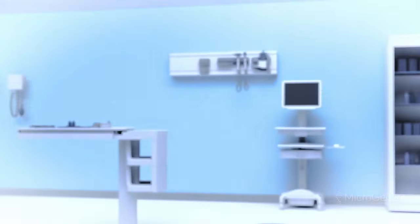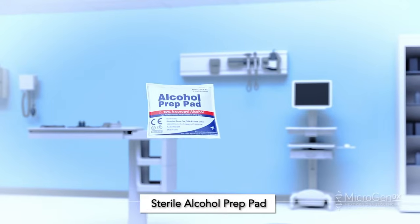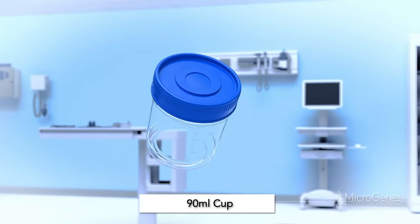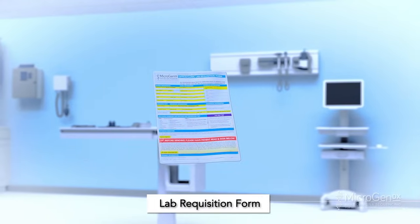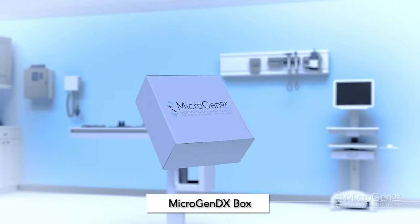The MicroGen DX Collection Kit will include 1 sterile alcohol prep pad, 1 90ml cup, 1 multipurpose swab, a bio bag, a lab requisition, and a MicroGen DX box.